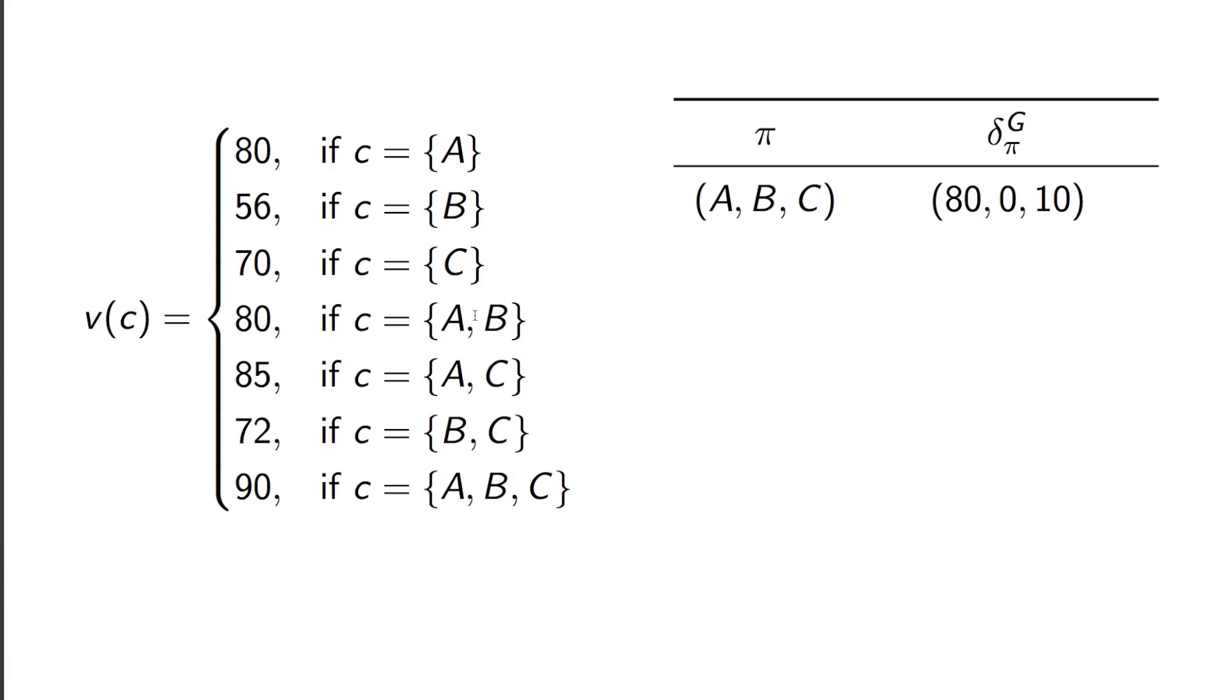Then B turns up. The value of the coalition that contains A and B is also 80. So B pays nothing. And then finally C turns up to make up the grand coalition. And C must pay 10.